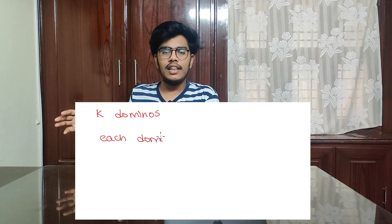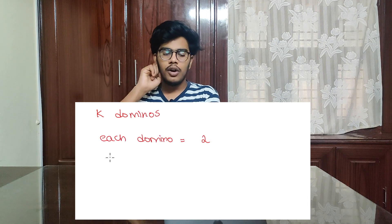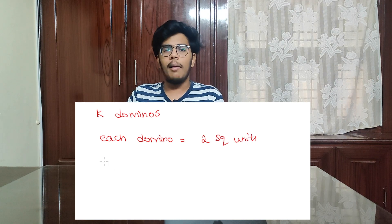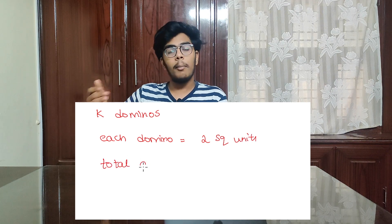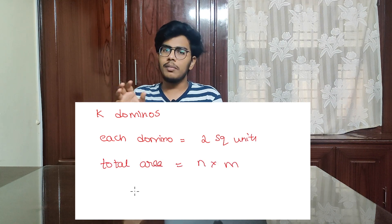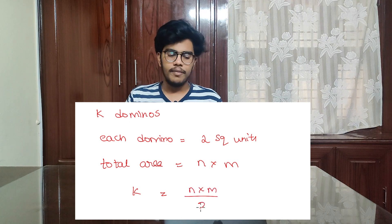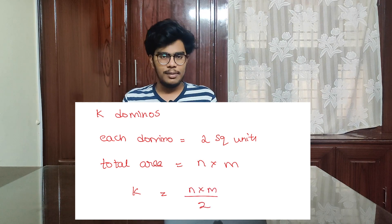Those dominoes will be fitted into the M cross N board, so the number of dominoes is M times N divided by two — that gives the maximum number of dominoes K. Quite simple! You just have to print the value of M times N divided by two. Let's go into the code editor and print that.